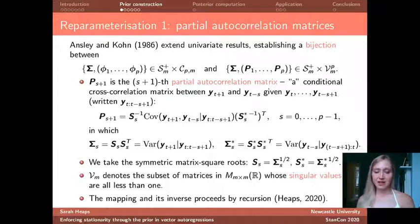So the way that Ansley and Kohn did it is that they based their standardization on this conditional variance, the conditional variance of Y_{t+1} given its s immediate predecessors, and the conditional variance of Y_{t-s} given its s immediate successors. So what they did is they decomposed these variance matrices according to their Cholesky decomposition, and the relevant Cholesky factors were then used in the standardization. So in my work, to get a reparameterization with the properties that I want, I can't use the Cholesky factors, and I have to use the symmetric matrix square roots.